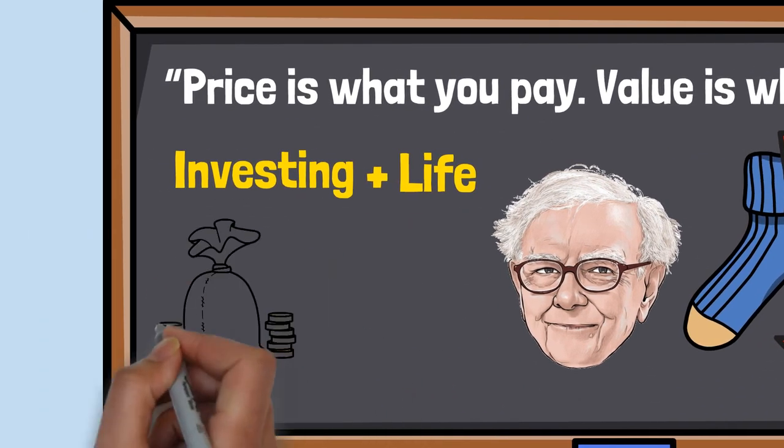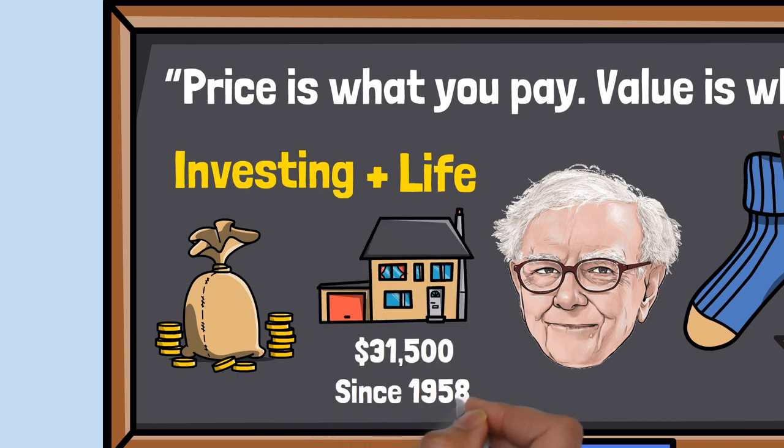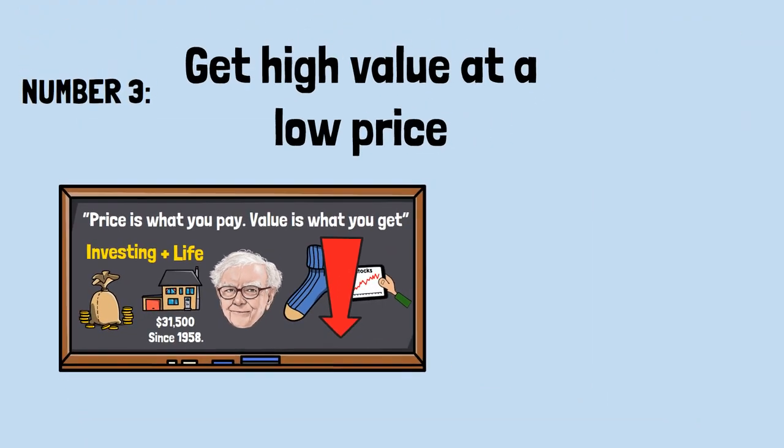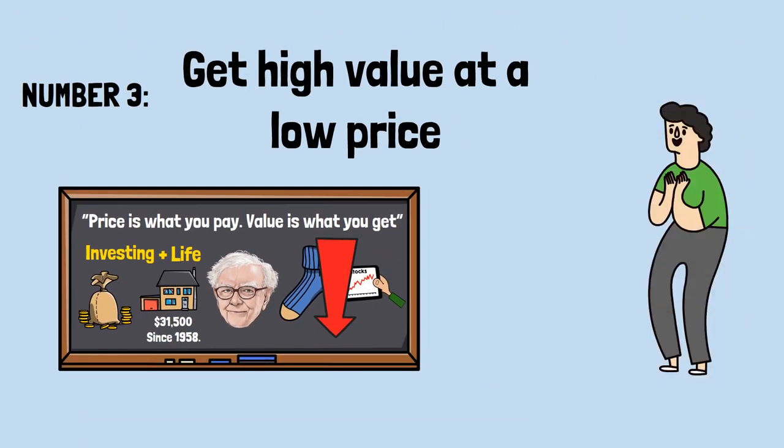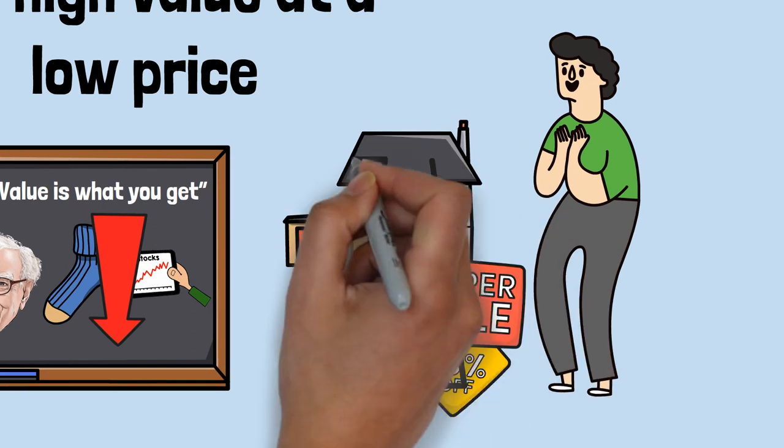Buffett himself lives a modest lifestyle, despite how wealthy he is, by living in the same house he purchased for $31,500 since 1958. The lesson that Mark should take from this is to always be in search of value at a low price, because typically, something that's valued will always go up in price.